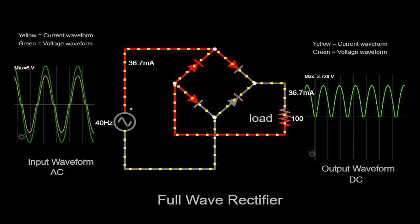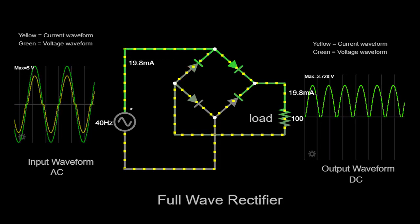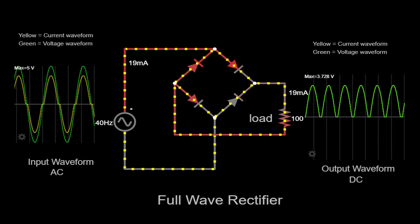This rectification process eliminates the negative half cycles of the input waveform, resulting in a pulsating DC output.